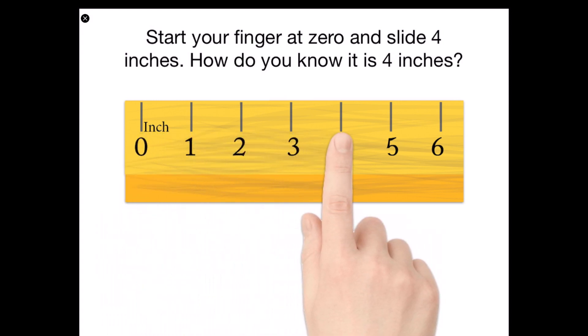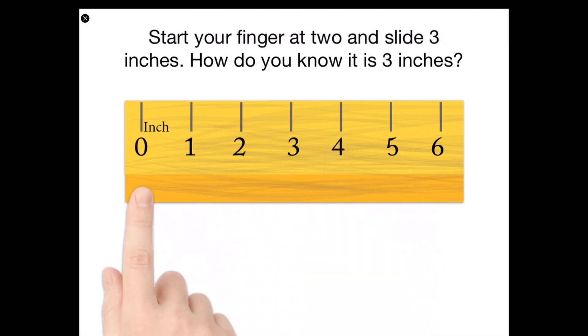Remember it's the space in between. Now start your finger at two and slide three inches. How do you know it is three inches? Well that one's different. We didn't land on three. But we landed on five. Remember because we started at two and then slid three inches. Which then lands us on five. But we moved three spaces.